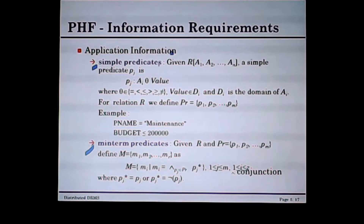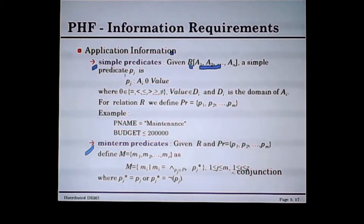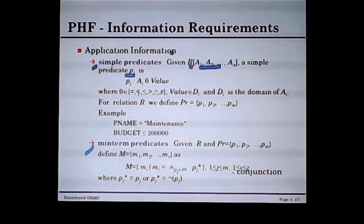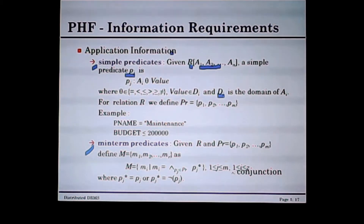A simple predicate means: given a relation R with N attributes, a simple predicate pj is of the form A_i η value, where A_i is an attribute, η is an operator — such as equal, less than, less than or equal, and so on — and value is a value in the domain d_i of the attribute A_i.